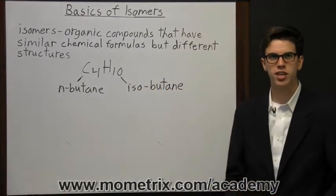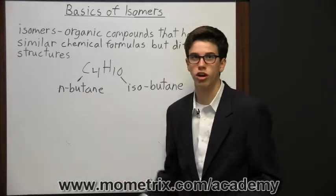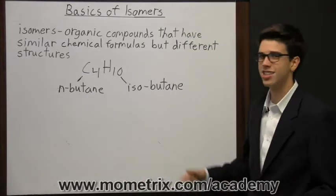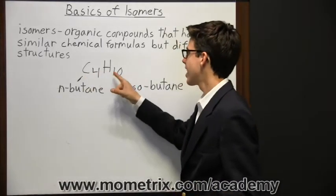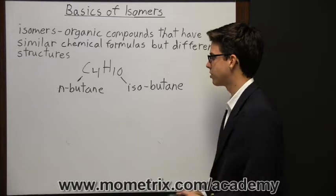n-butane is a straight chain structure, then isobutane is a branched chain structure. But both of these structures contain four carbon atoms and 10 hydrogen atoms.